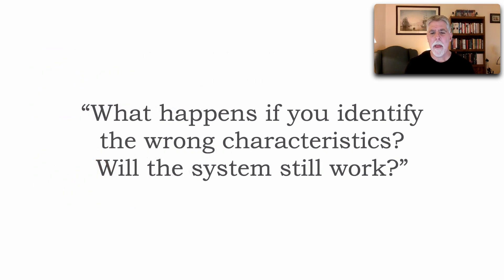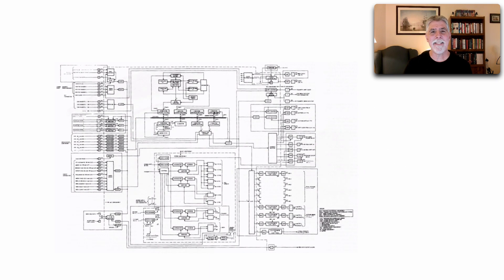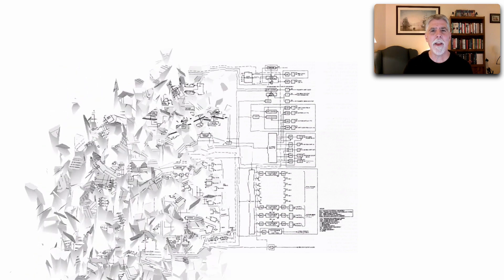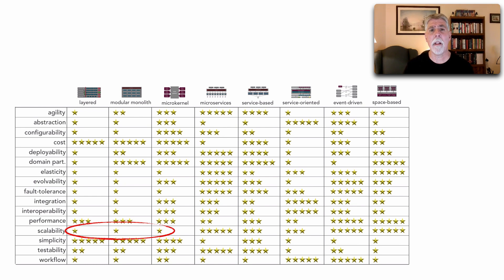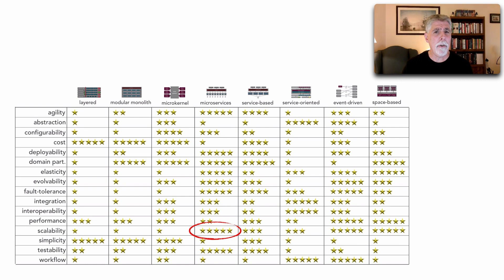Another question I get a lot — and I just got this one yesterday — is: what happens if you identify the wrong architecture characteristics? Will the system still work? The answer is no, it won't. Sure, it may work functionally for a while, but it will eventually stop working. If a system needs to scale and we choose the wrong architecture, the monoliths won't scale but microservices will. Each architecture style has strengths and weaknesses, as shown by the star ratings in our book.